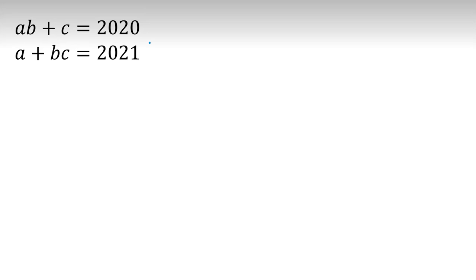When you have similar equations, we need to subtract. Second one minus first one: a + bc - ab - c = 2021 - 2020.